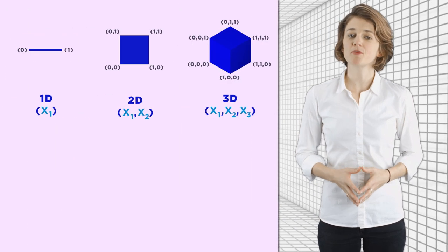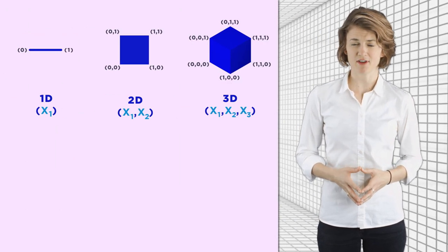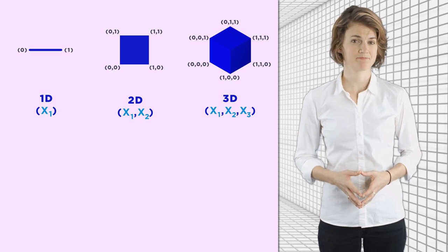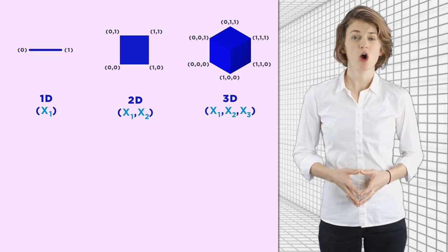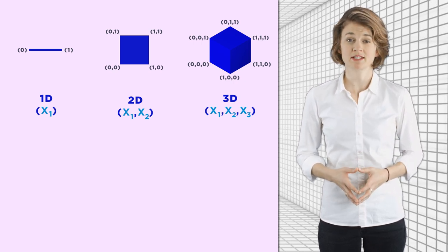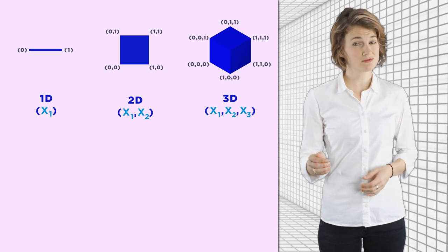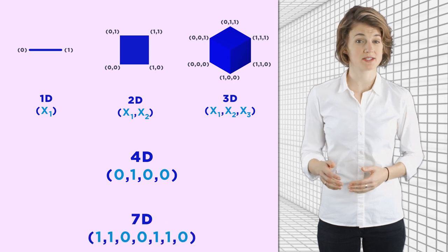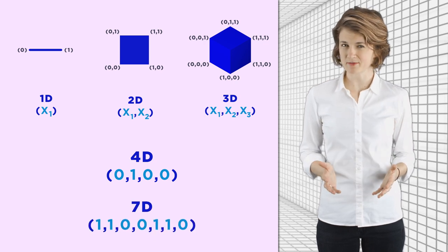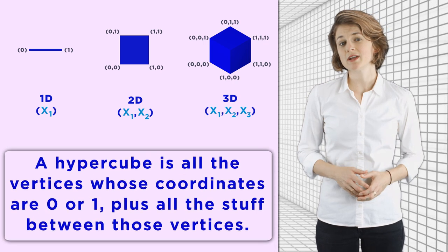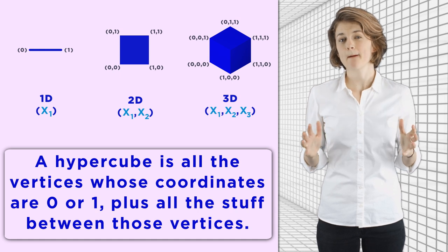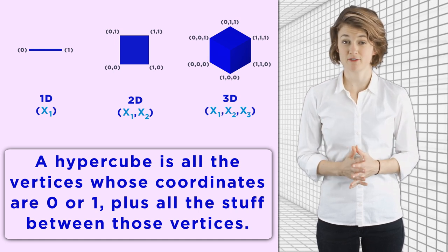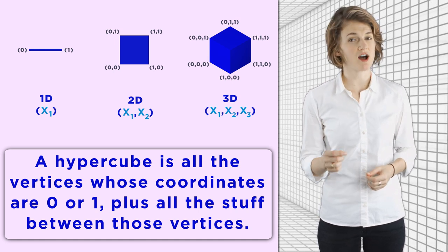Let's give a definition for a cube that works in all dimensions. First, remember that the points in n dimensions are specified by n coordinates. The vertices of a cube are all the points where the coordinates are either 0 or 1, like 0, 1, 0, 0 in four dimensions, or 1, 1, 0, 0, 1, 1, 0 in seven dimensions. The cube is all those vertices plus all the stuff between the vertices, what's known as the convex hull.